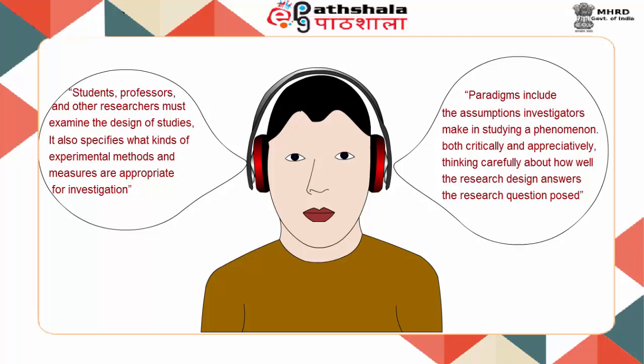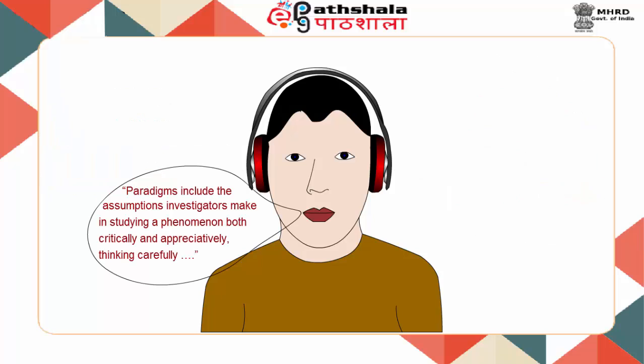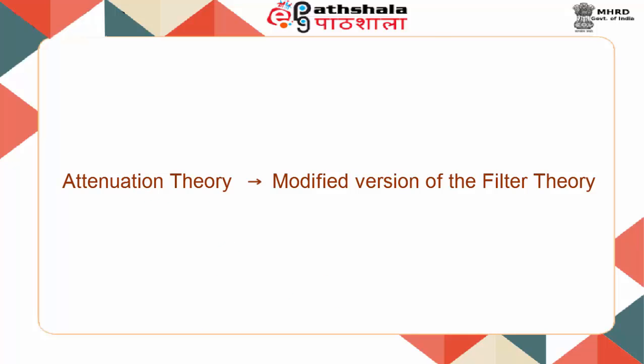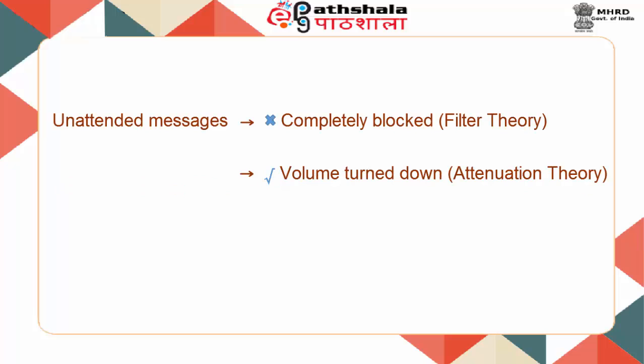Immediately after the messages were switched, the participant repeated one or two words from the unattended ear. To explain these findings, Annie Treisman proposed a modified version of the filter theory and called it the attenuation theory. Treisman argued that instead of considering unattended messages as completely blocked, their volume was turned down or attenuated.